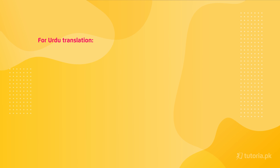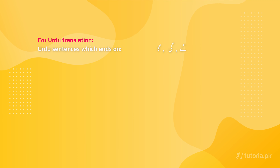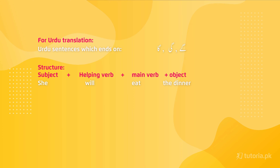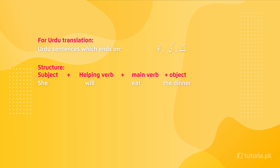The structure is: Subject + helping verb (will) + main verb (first form) + object. For example: 'She will eat the dinner.' Examples from Urdu: 'Wo school jayenge' translates to 'They will go to school', and 'Wo ek khat likhe gi' translates to 'She will write a letter.'